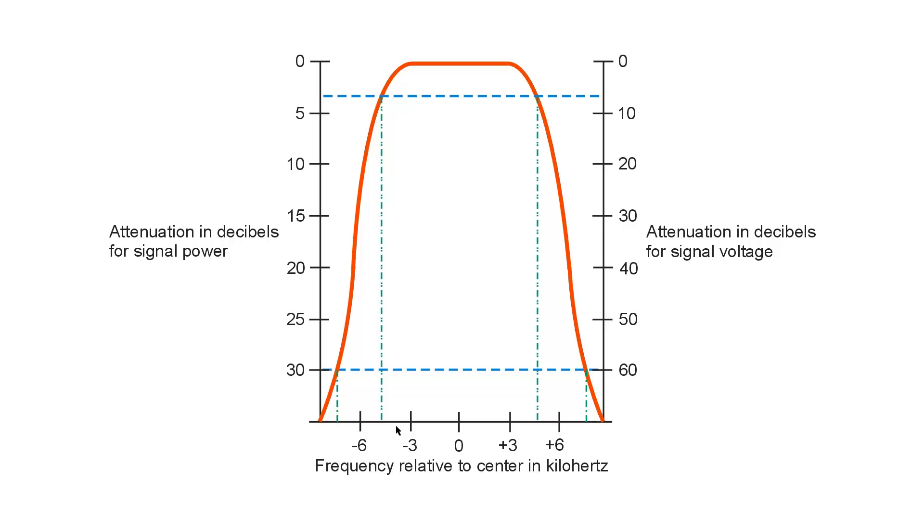In the case of 3 decibels down for power or 6 decibels down for voltage, the 3 to 30 decibel shape factor, so-called, for power, we can say, well, it looks like about...